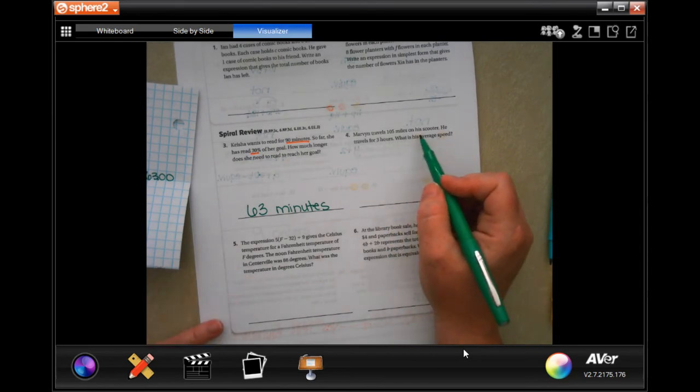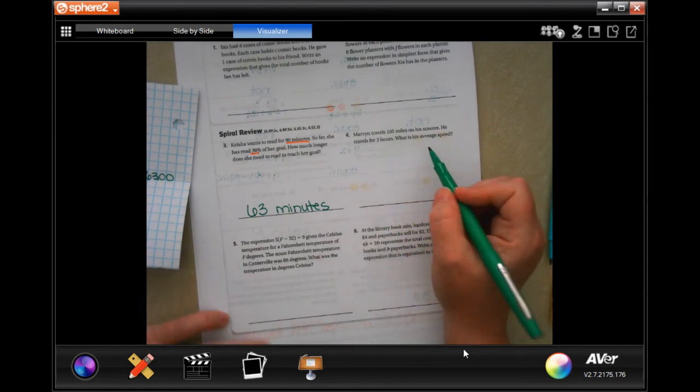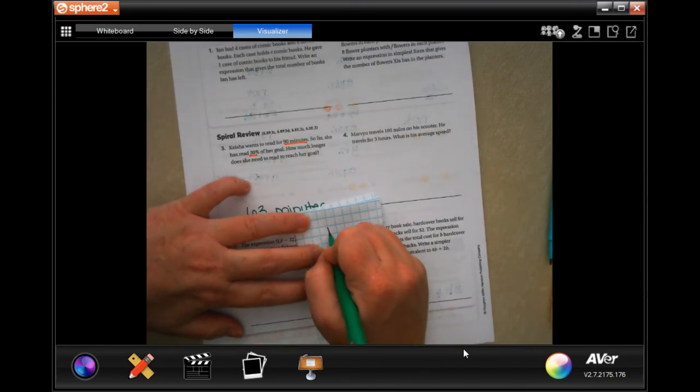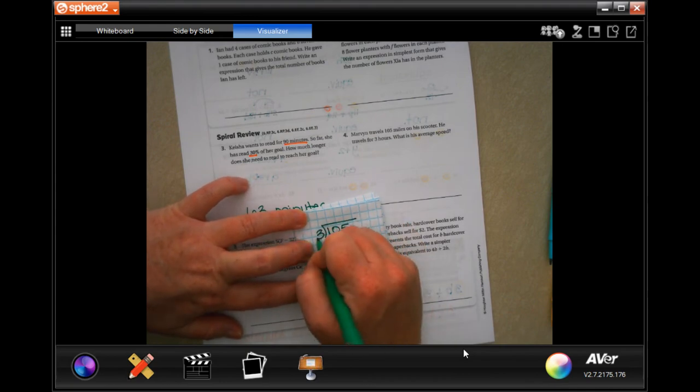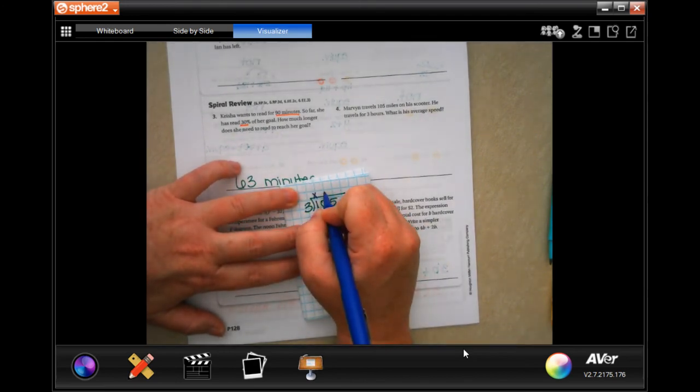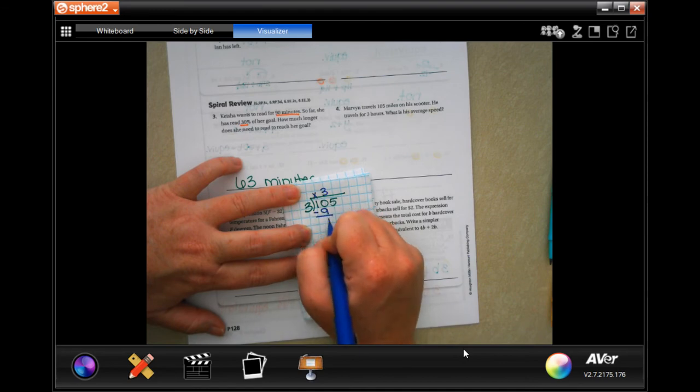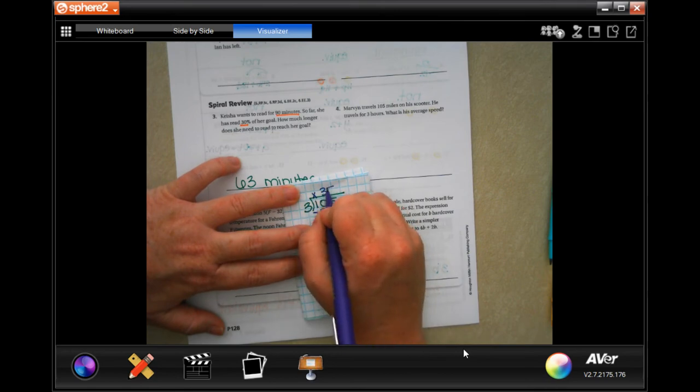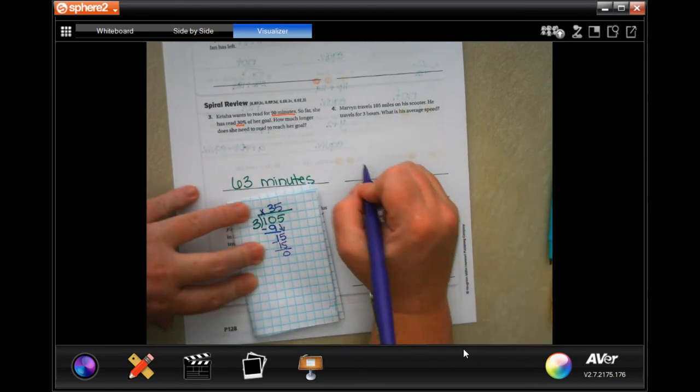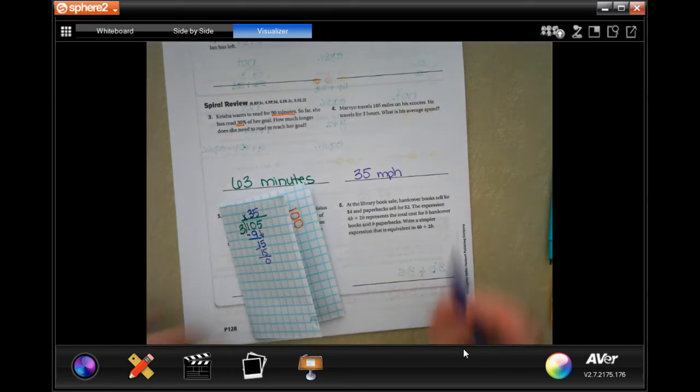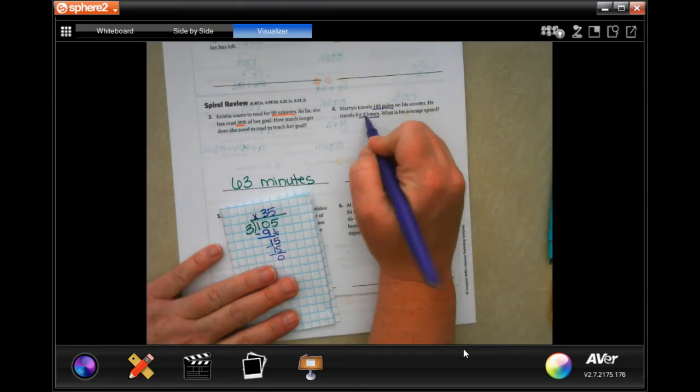Marvin travels 105 miles on his scooter. He travels for 3 hours. What is his average speed? Well, 105 divided by 3. 3 is not going to go into 1, but it'll go into 10 three times, which is 9. Subtract and get 1. 1 is smaller than 3, so I can bring down my 5, and then 3 goes into 15, 5 times for 15, subtract, get 0. So 35 miles per hour.